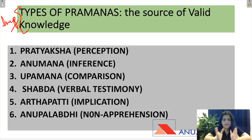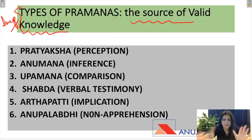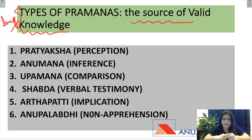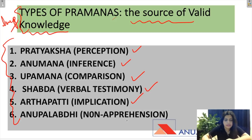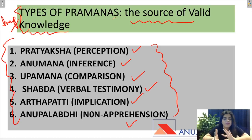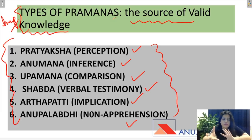Now the second important topic is the Types of Pramanas — the sources of valid knowledge. We have read the introduction and meaning; now we will learn how many types of Pramanas there are, i.e., what are the sources of valid knowledge. There are six sources of valid knowledge: Pratyaksha (Perception), Anumana (Inference), Upamana (Comparison), Shabda (Verbal Testimony), Arthapati (Implication), and Anupalabdhi (Non-Apprehension).